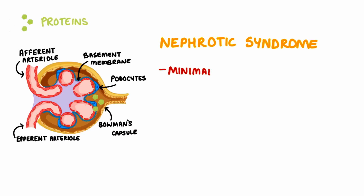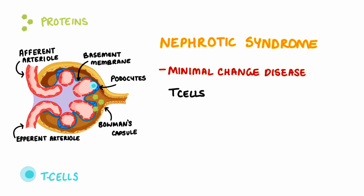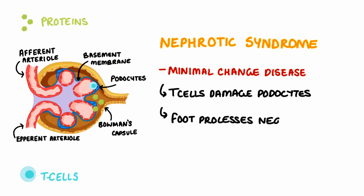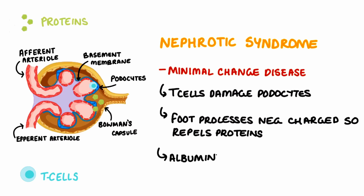But what causes this? Minimal change disease is the most common cause in children. The exact underlying mechanism isn't fully clear; however, there seems to be an involvement of T cells. The T cells can damage the podocytes in minimal change disease. The foot processes of the podocytes are usually negatively charged like the proteins, meaning that there's repulsion and hence preventing the proteins from being part of the urine. But because the podocytes are damaged, the proteins can then pass into the urine. Other common causes of nephrotic syndrome include diabetic kidney disease, amyloidosis, and SLE.